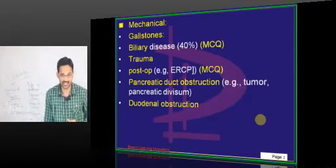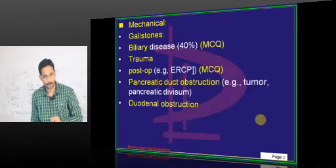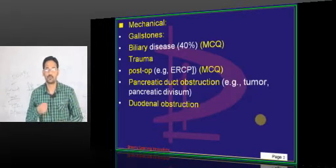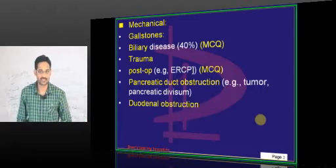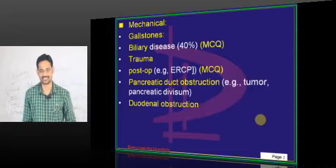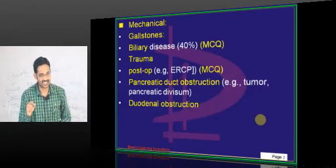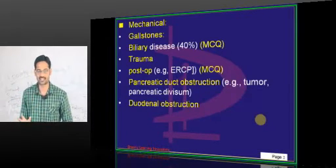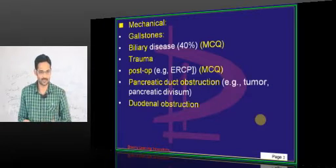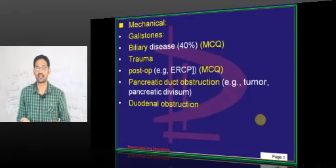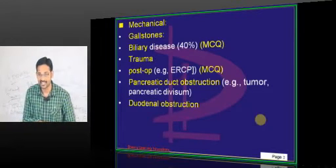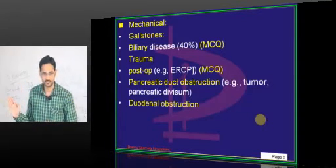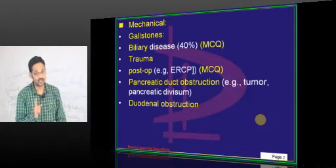In chronic pancreatitis, there are repeated attacks of acute pancreatitis, leading to destruction of pancreatic cells and fibrosis. With no parenchyma to produce enzymes, amylase and lipase may not be elevated in chronic pancreatitis. There is a possibility that even with normal amylase and lipase, it is still a case of chronic pancreatitis.